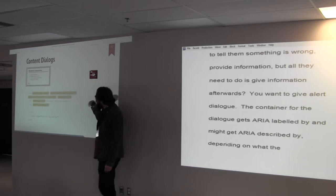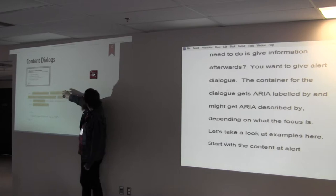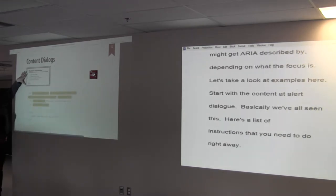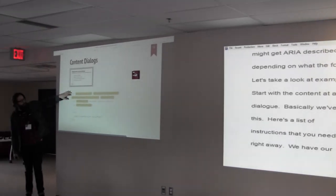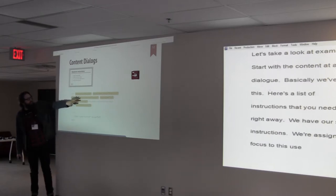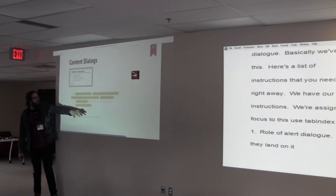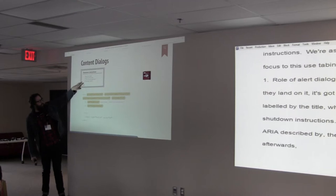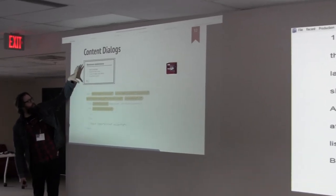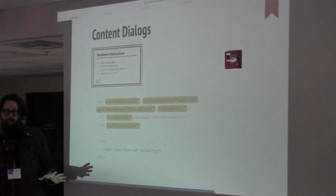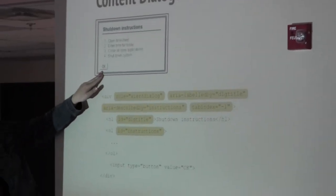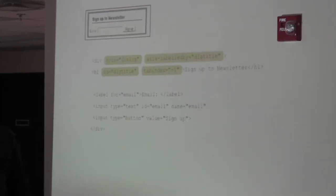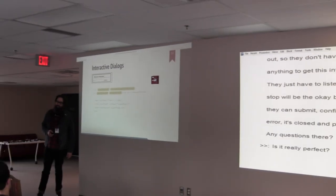Let's start with the context of an alert dialogue. Basically, we've all seen this. It's like, here's a list of instructions that you need to do right away. So we've got our shutdown instructions. Basically, again, we're assigning focus to this using tab index negative one. It's got a role of alert dialogue. When they land on it, it's got ARIA labeled by the title, which is the shutdown instructions. It's got ARIA described by the instructions afterwards, which is this ordered list. And basically, what's going to happen is, once this focus has moved to this dialogue, all of this is going to be read right away. So they don't have to do anything to get this information. They just have to listen. The next tab stop is going to be the OK button. So they can submit, confirm their error. It's closed. Perfect.